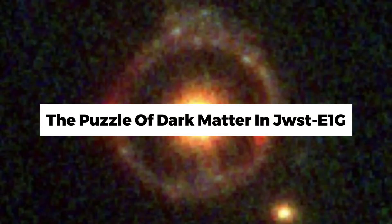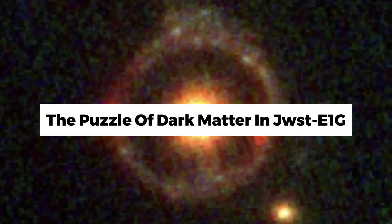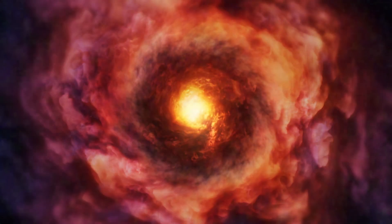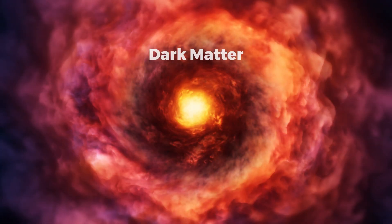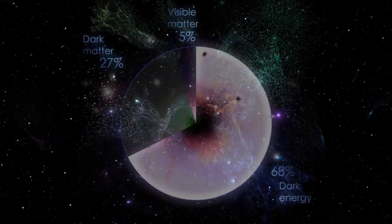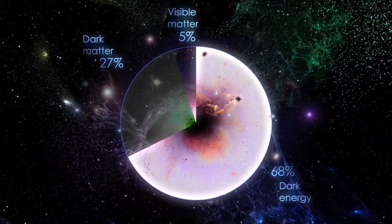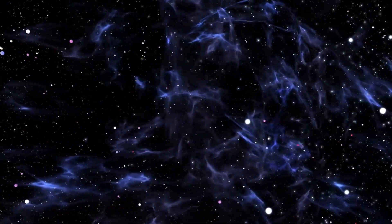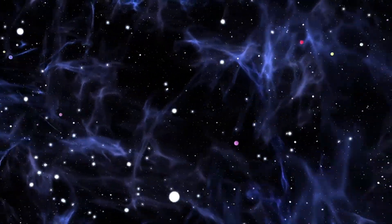The Puzzle of Dark Matter in JWST-E1G. The study of this galaxy through its Einstein ring brings us to a critical aspect of cosmology, the enigma of dark matter. Dark matter, which makes up about 85% of the universe's total matter, does not emit, absorb, or reflect light, making it invisible and detectable only through its gravitational effects.